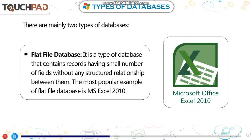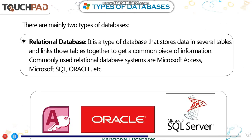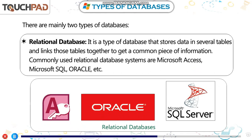The most popular example of a flat file database is MS Excel 2010. Relational Database: it is a type of database that stores data in several tables and links those tables together to get a common piece of information. Commonly used relational database systems are Microsoft Access, Microsoft SQL, Oracle, etc.